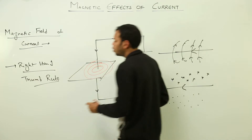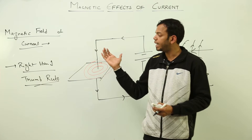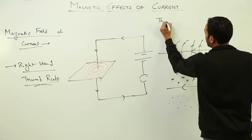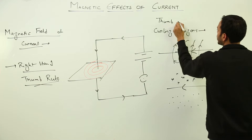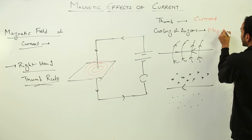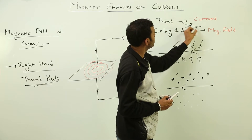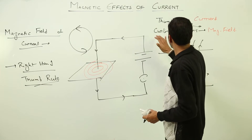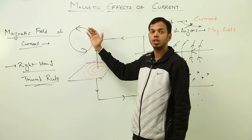One more thing about the right-hand thumb rule: if we place the thumb of the right hand in the direction of flow of current, the curling of fingers gives the direction of magnetic field. The converse is also absolutely true — if curling of fingers represents current, then the thumb represents magnetic field. Consider a circular loop with current flowing in this direction: curling of fingers in the direction of current means the thumb shows the direction of magnetic field — so magnetic lines of force are coming out from this region.